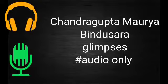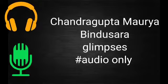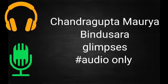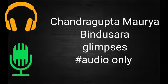Chandragupta led a policy of expansion and brought under his control almost the whole of present India, except a few places like Kalinga and the extreme south. His reign lasted from 321 BCE to 297 BCE. Chandragupta Maurya ordered the construction of Sudarsana Lake, located in the middle of the hill called Girnar in Saurashtra. This lake was constructed by Chandragupta's governor Pushyagupta Vaishya, who was in charge of Saurashtra.